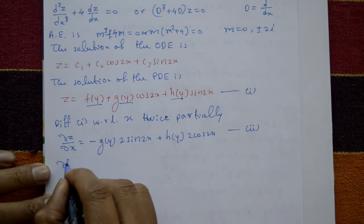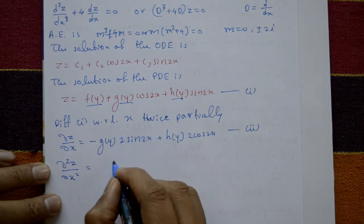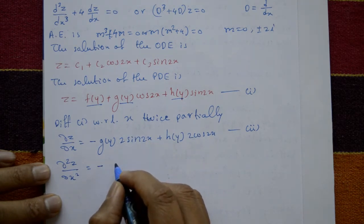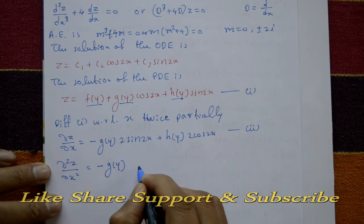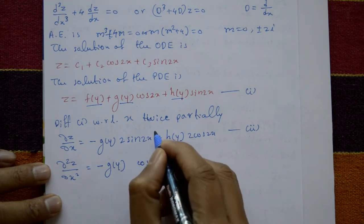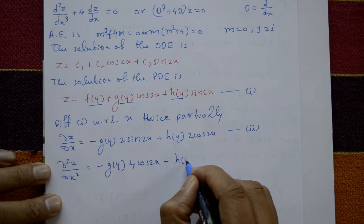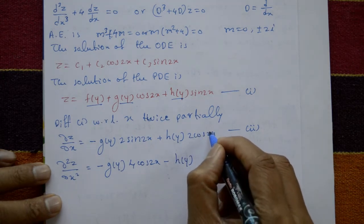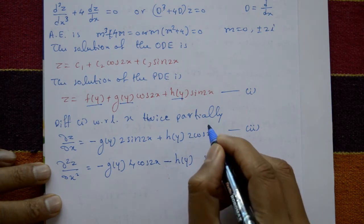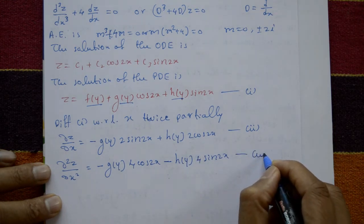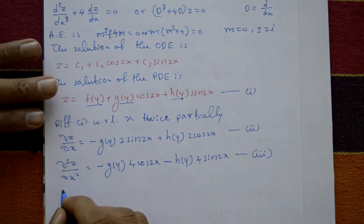Differentiate again with respect to x to get d²z/dx²: d²z/dx² = −4g(y)cos(2x) − 4h(y)sin(2x). Call this equation number 3. Now apply the given conditions.